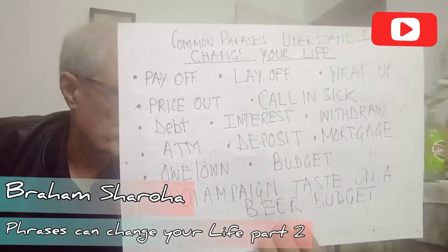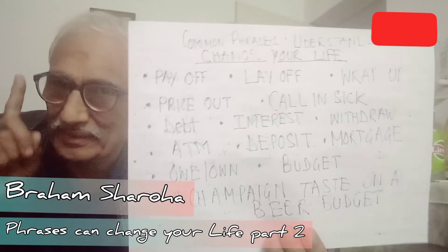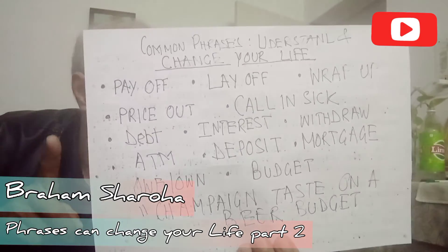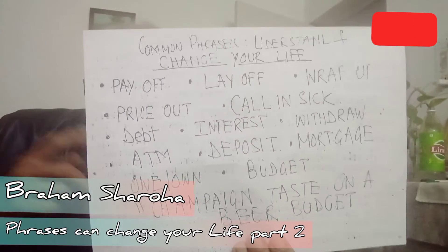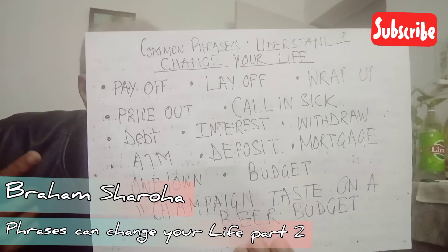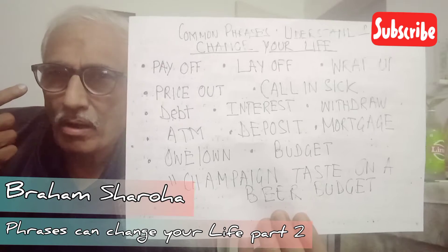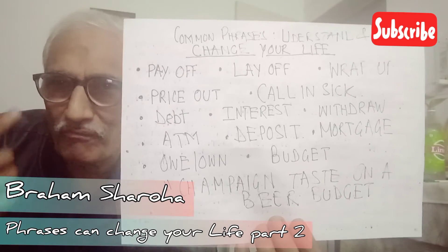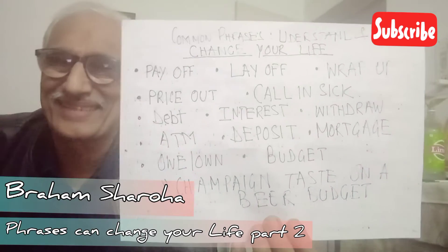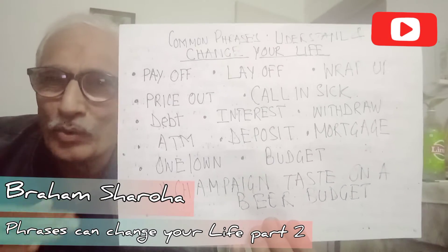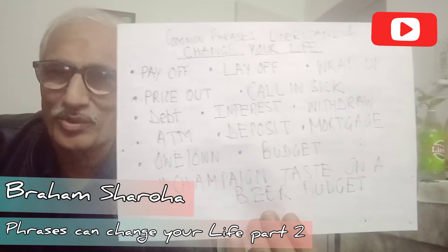The next phrasal verb is 'priced out' — past tense is 'priced out.' This is used when you are unable to buy or invest due to a price increase. For example: the opportunities to invest in the share market were priced out by the unusual rise in share prices, or the unusual rise in share prices priced out the opportunity to invest.